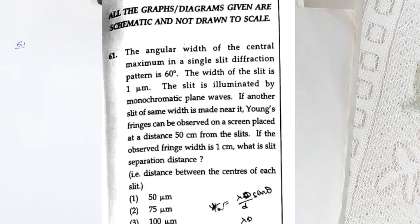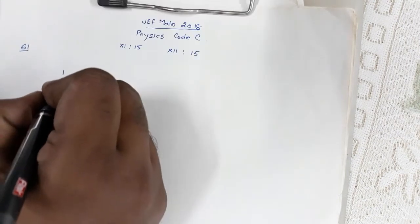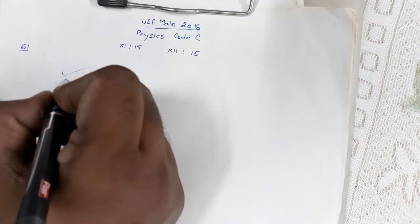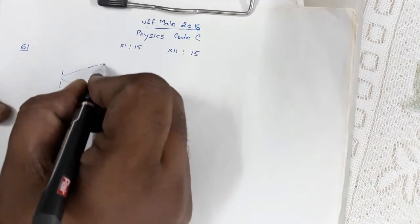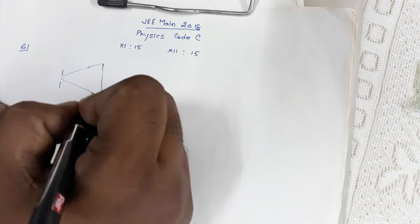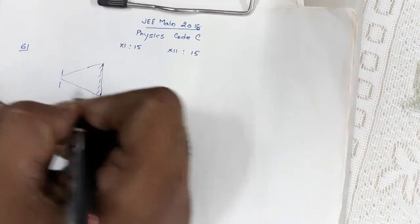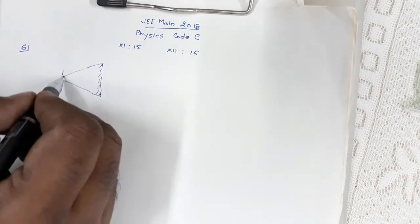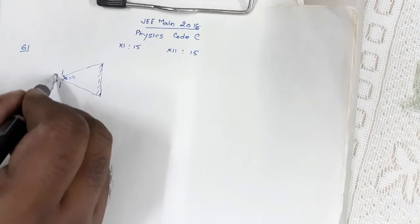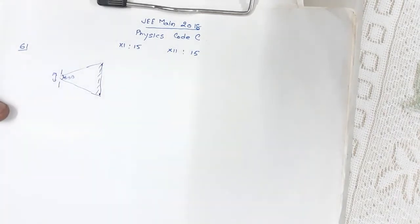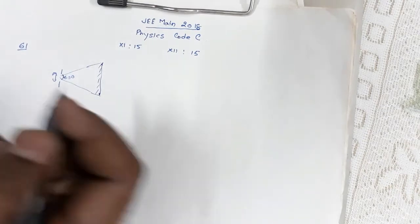Question 61 reads: the angular width of the central maxima in a single slit diffraction pattern is 60 degrees. In a single slit diffraction pattern, suppose this is the slit, then this is the diffraction pattern. This is the central maxima and this angle is 60 degrees, and this is the width of the slit.